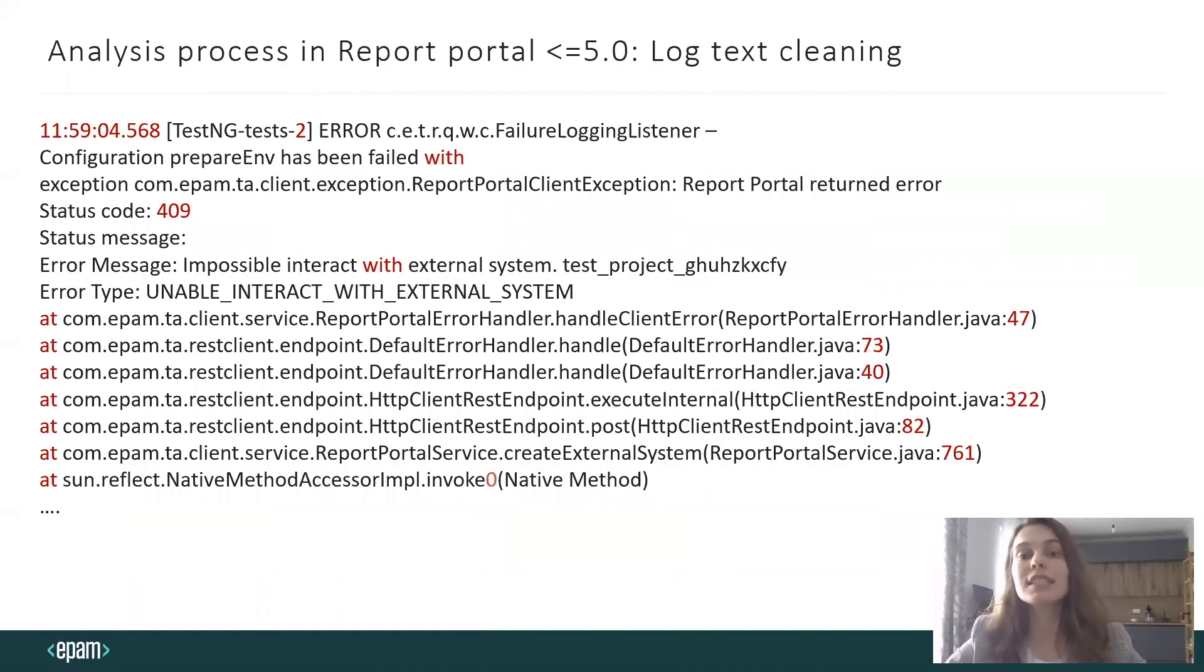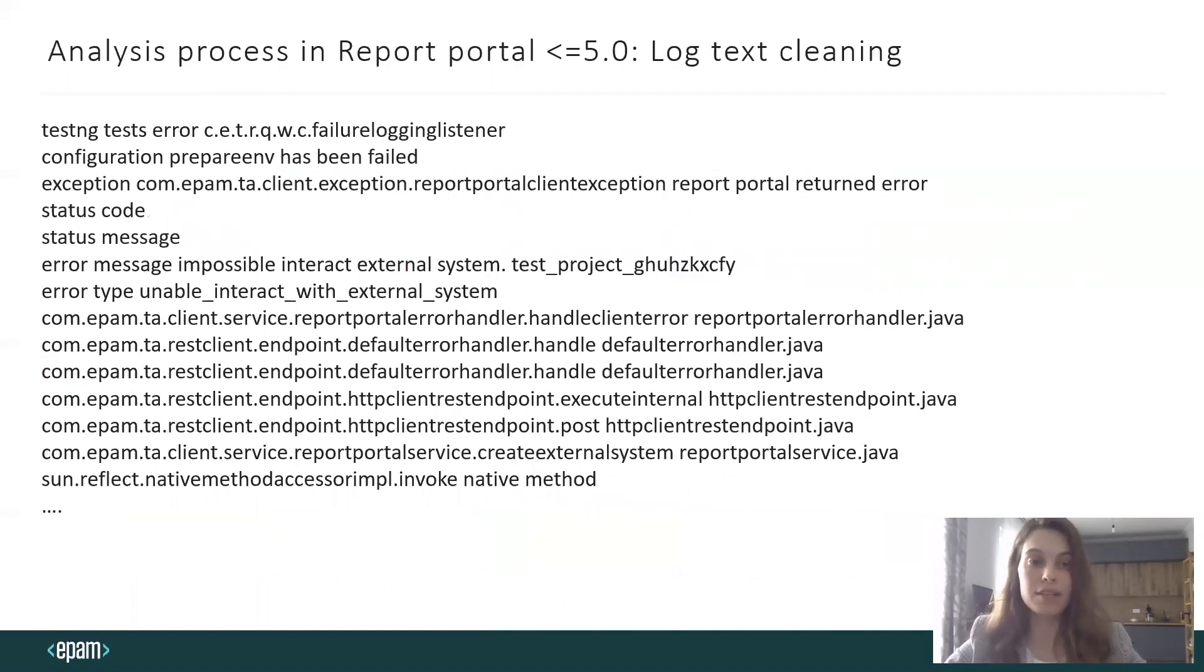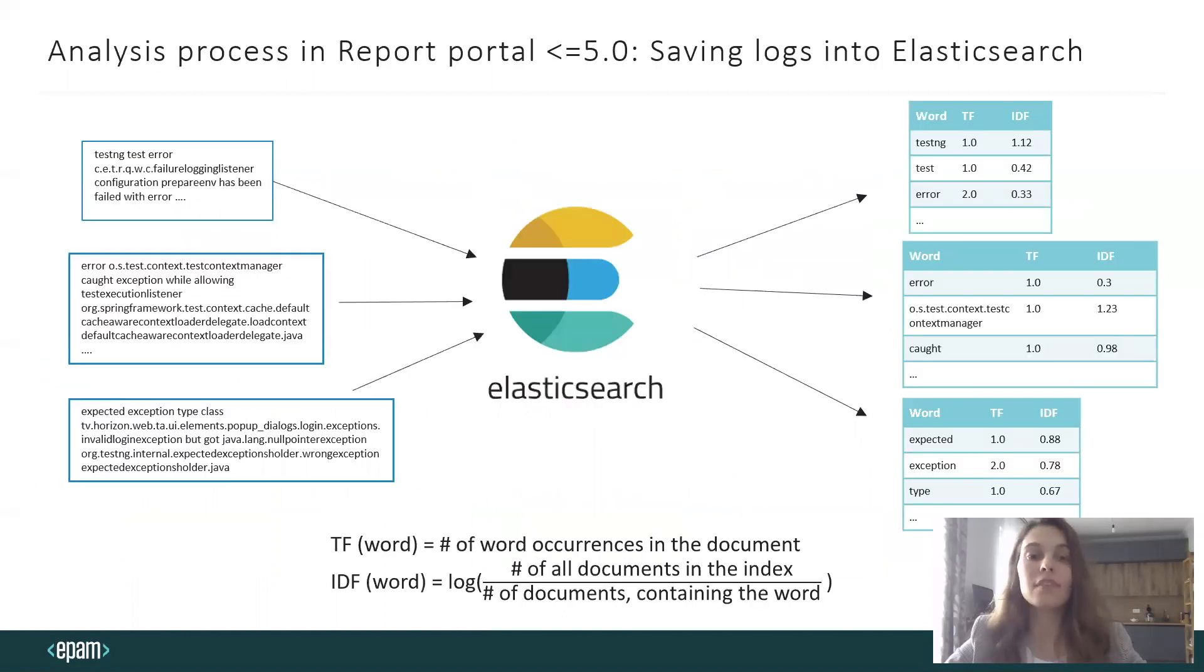Log text cleaning involves removing stop words, numbers, and starting date times. The text is lowercased. After that, we search the logs in Elasticsearch and they are characterized by TF-IDF vectors. TF means term frequency, whereas IDF stands for inverted document frequency. This helps to reweight the words and their meaning in the text in a more appropriate way.